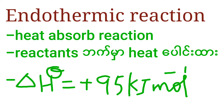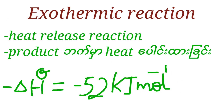An endothermic reaction is one that absorbs heat from the surroundings, and delta H is positive. An exothermic reaction is one that releases heat to the surroundings, and delta H is negative.